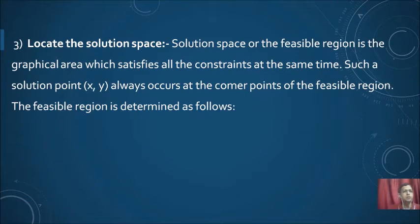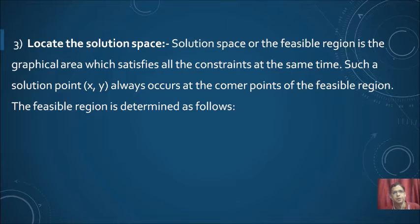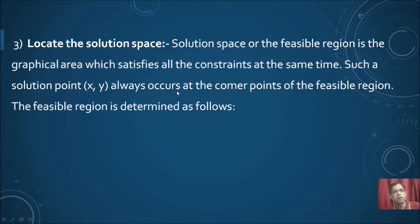The next step is to locate the solution space. The solution must satisfy all the constraints. When you draw all the line segments, you will have some common region — that common region is your solution space. The feasible region is the graphical area that satisfies all constraints simultaneously. The solution point (x, y) always occurs at the corner points of the feasible solution space.